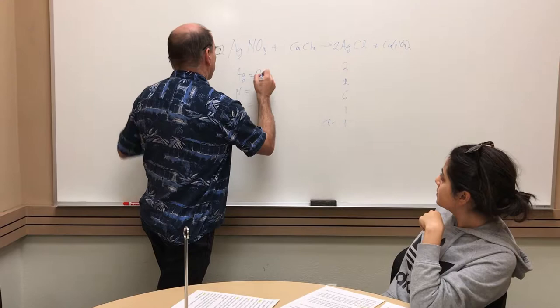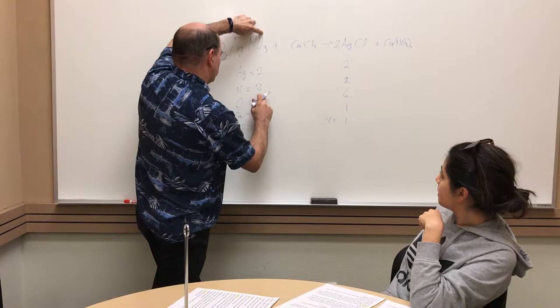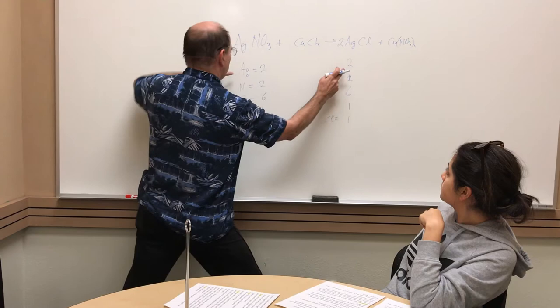Okay. And then now we would compare the numbers. At this point we'd have two silvers, I think we'd have two nitrogens, six oxygens, one copper, two chlorines.